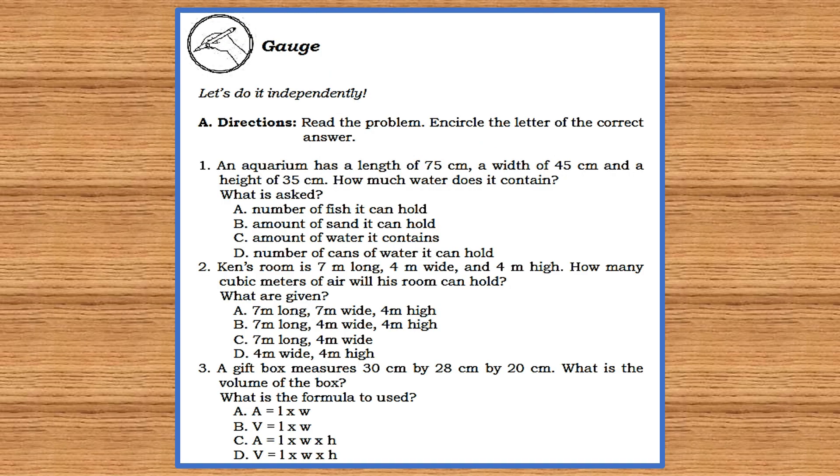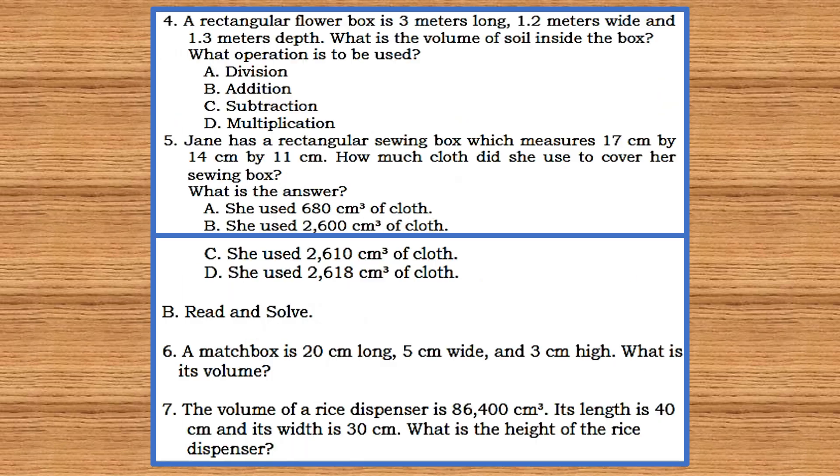Let's do it independently. This part will also serve as the performance task of online asynchronous class. For letter A, directions: Read the problem, encircle the letter of the correct answer. I'll give you a few minutes to finish this activity. And for letter B, read and solve. I'll give you a few minutes to finish this activity.